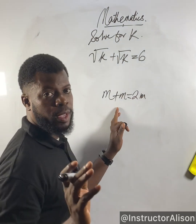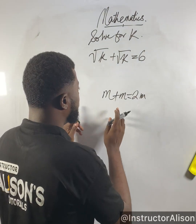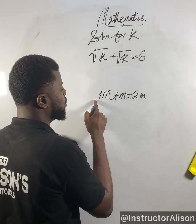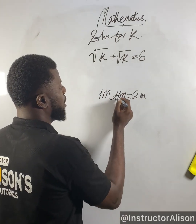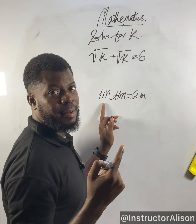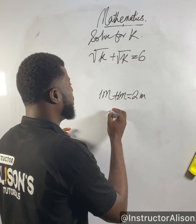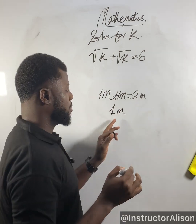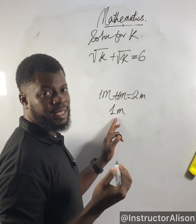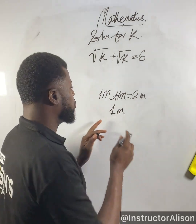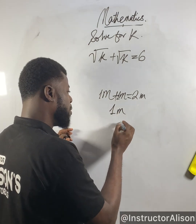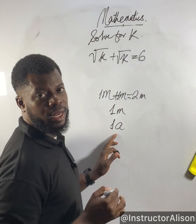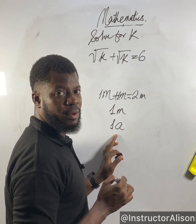How did I arrive at 2m? I observed that the coefficient of this m is 1 — these ones are invisible, you are not seeing them. We wouldn't write 1m because it looks so basic. So when you say a number or a variable, just know that there is an invisible 1 attached to it.